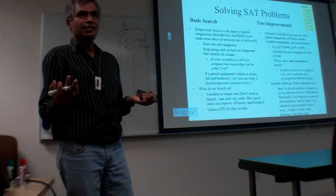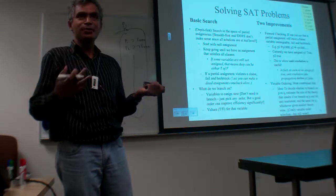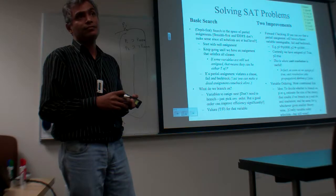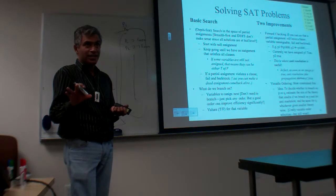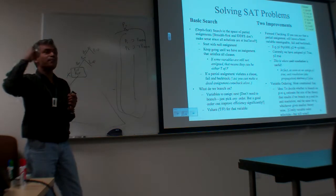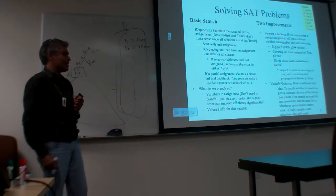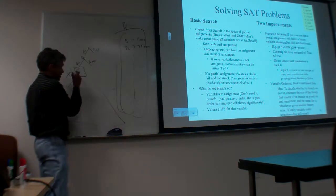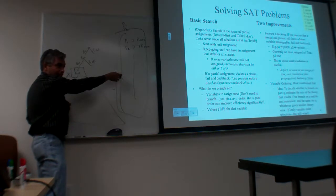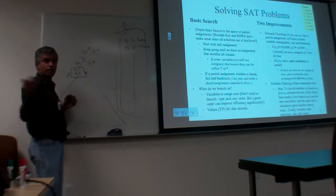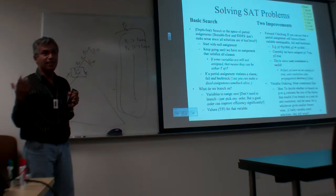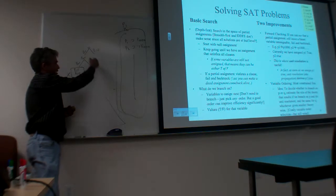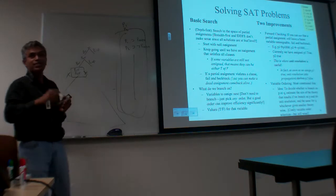Figuring out that this partial assignment cannot lead to any model is basically: take the entire theory, add P1 and P2, and show this has no model. But how do you show there is no model? Theorem proving. If you wanted to prove alpha, you negate alpha, throw it into the knowledge base, and try to show the KB plus negated alpha has no model. So essentially, at each step, call the theorem prover — if it derives an empty clause, you don't have to go forward.